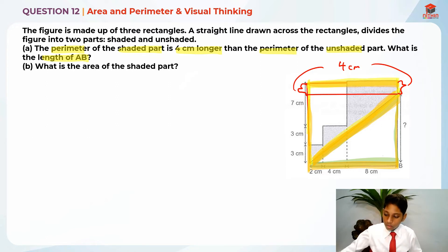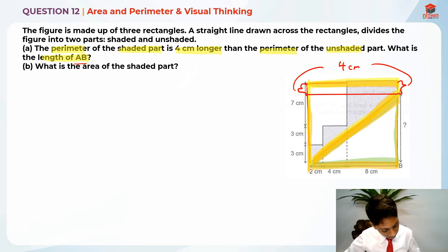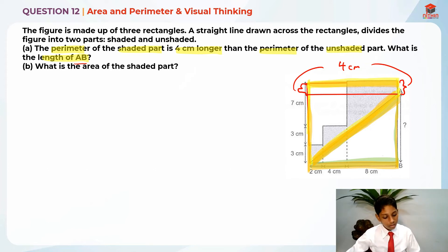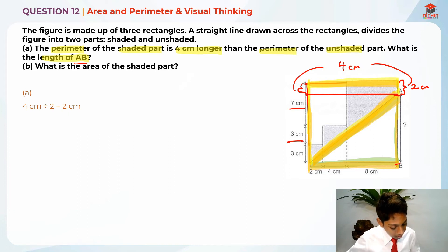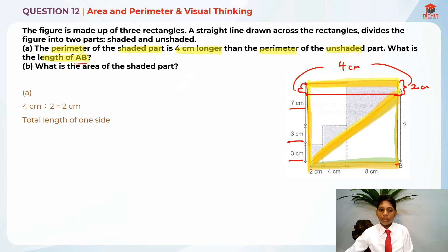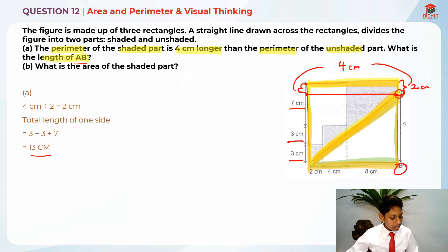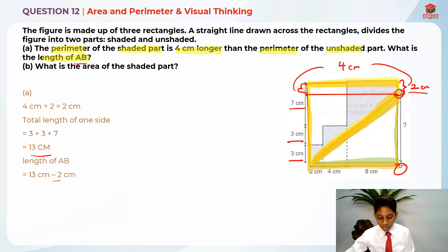These two parts make 4 cm. In order to find the length of AB, we need to find this length here. This length is easy to find: we just take 4 cm divided by 2, which gives us 2 cm. As for AB, we calculate the total length of one side: 7 cm plus 3 cm plus 3 cm equals 13 cm. Then length of AB is 13 cm minus 2 cm, which gives us 11 cm. That is the answer for part A.